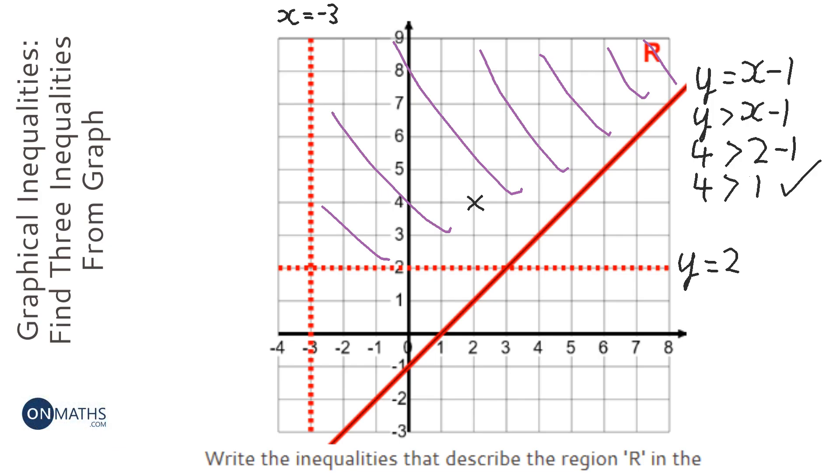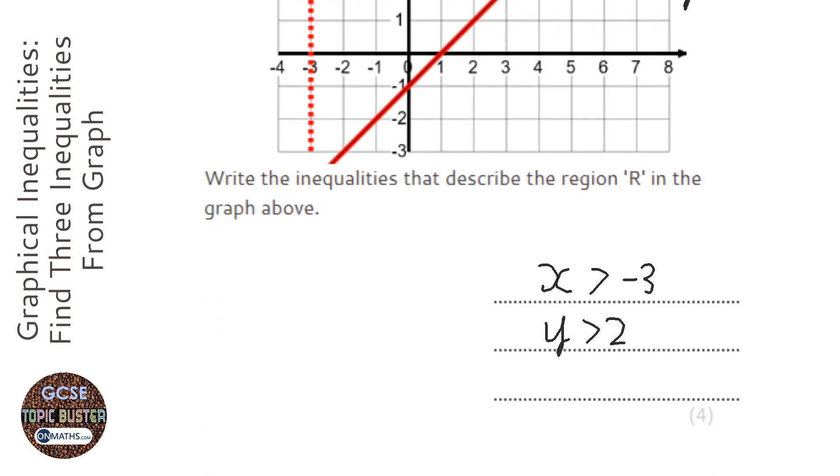Yes it is. So we've picked the right one but because it's a solid line it needs to have a line underneath it. So it's y is greater than or equal to x minus 1. And those are our three inequalities that represent the region on the graph.